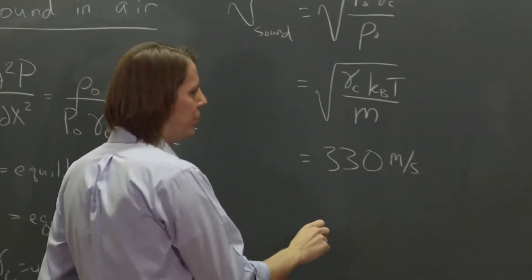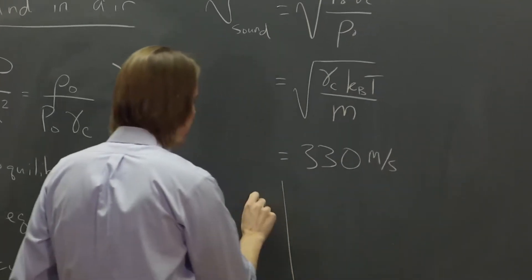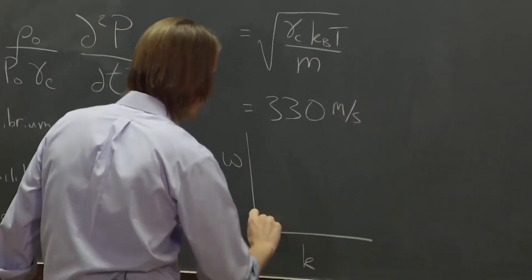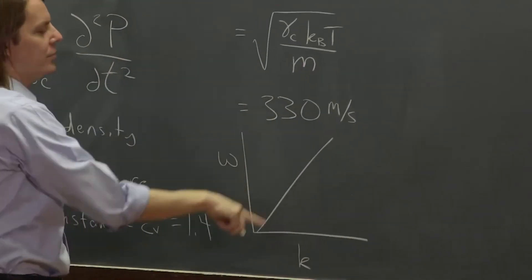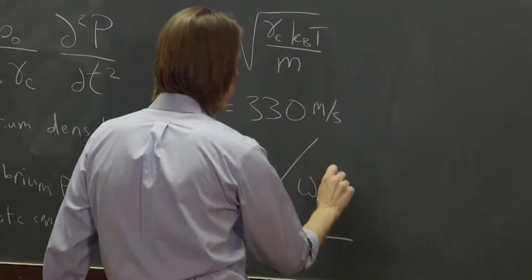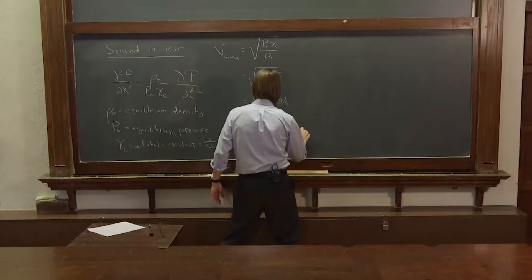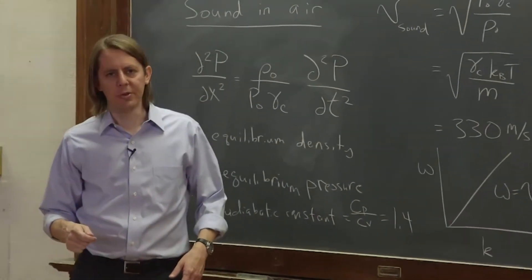So we could write that we have a pretty good linear relationship between ω and k like that. So basically, ω equals this velocity times k is what that means in the air. And we know this is true from experience.